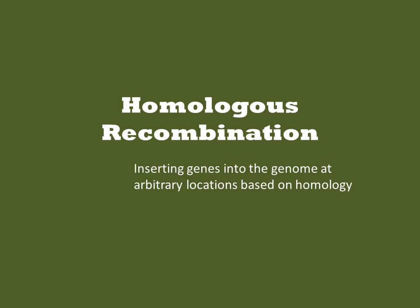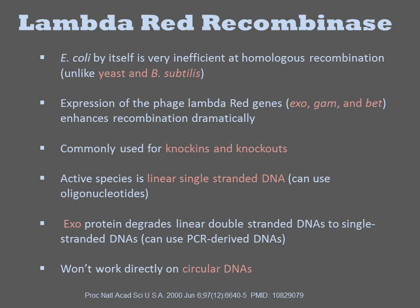Homologous recombination underlies many genome engineering methods. It involves inserting DNAs into the genome at arbitrarily chosen locations based on their homology to that local sequence. In E. coli and other bacteria that lack efficient homologous recombination systems, this functionality can be enhanced by expression of lambda red recombinase.